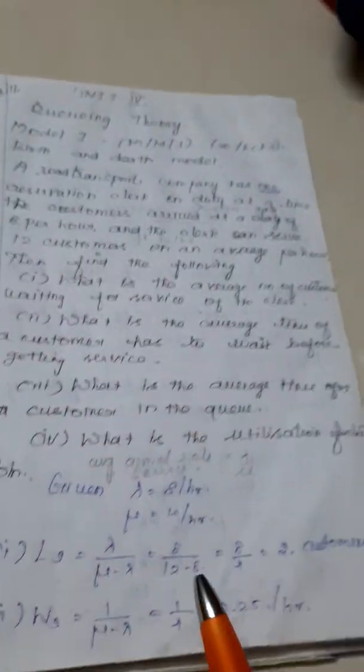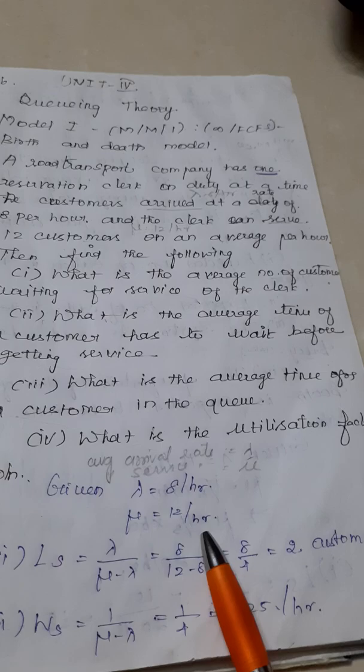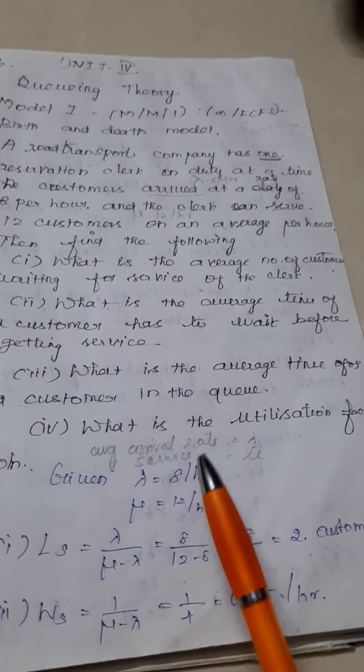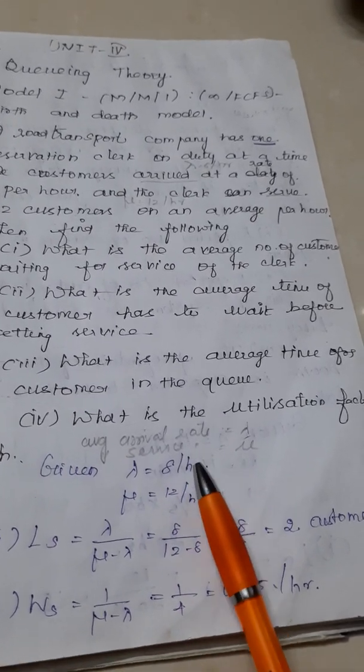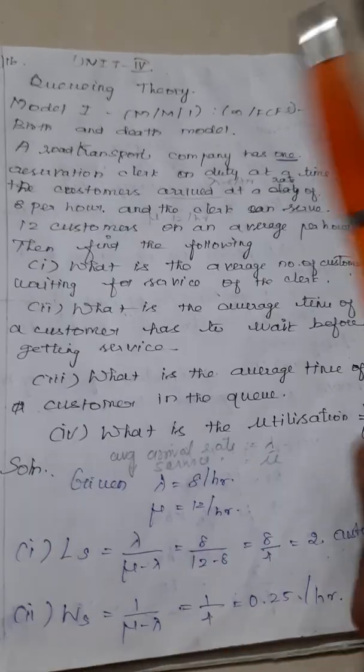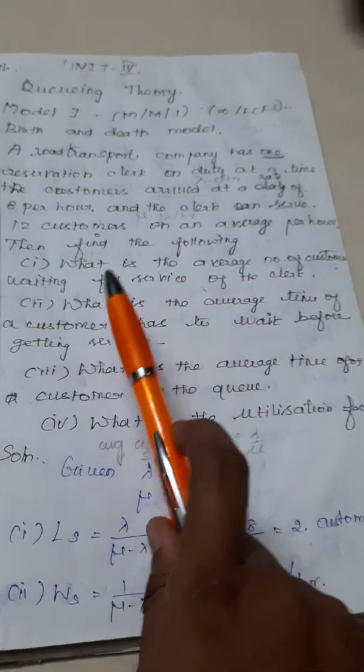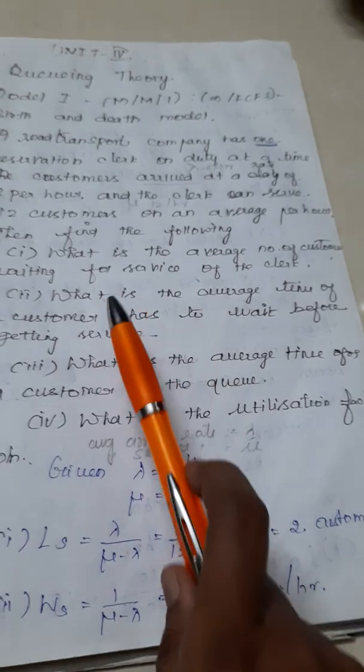Once my lambda and mu values are taken down, we check both values are expressed in the same unit of time. So lambda value is known to us, mu value is known to us. Now let us find the following measures.